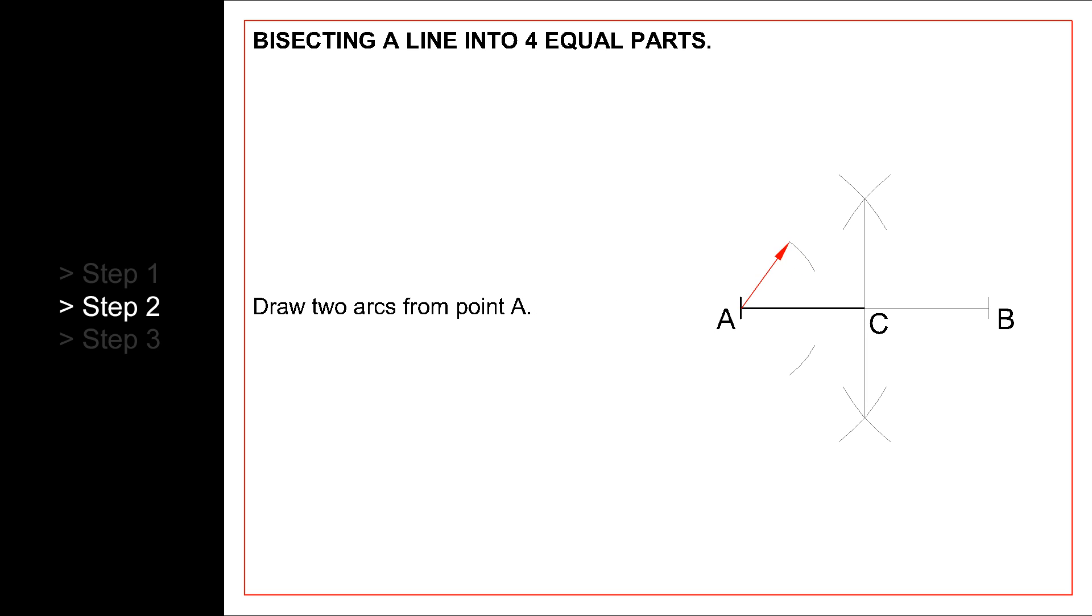So, starting with line AC, draw two arcs from point A, two more arcs from point C, and the perpendicular bisector.